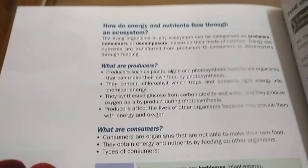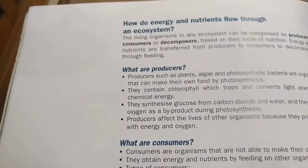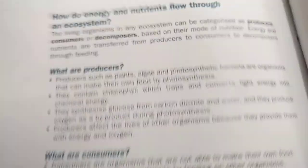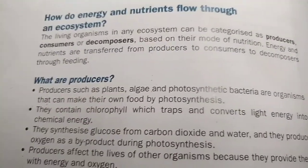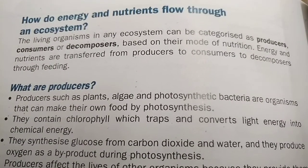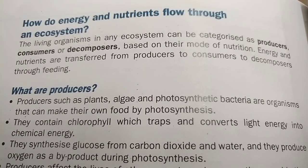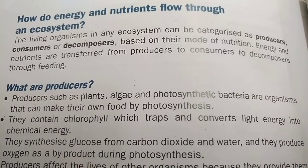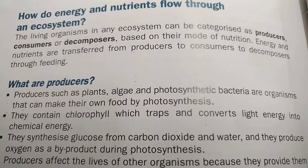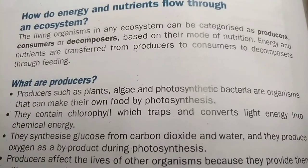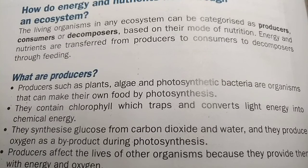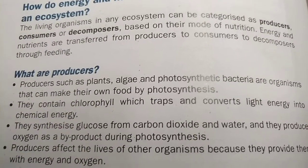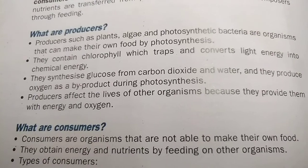Here we are on page 410 of your book: how do energy and nutrients flow through an ecosystem? The living organisms in an ecosystem can be categorized as a producer, consumer, or decomposer — that's why I am showing it in the form of a triangle — based on their mode of nutrition. Energy and nutrients are transformed from the producers to the consumers to the decomposers through feeding.